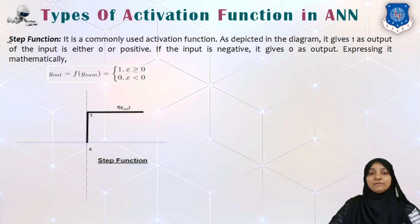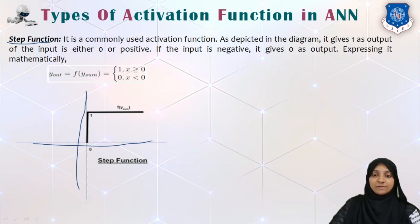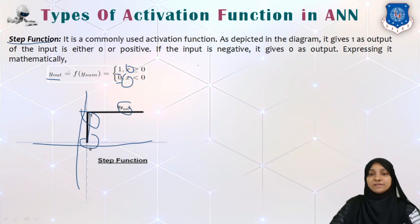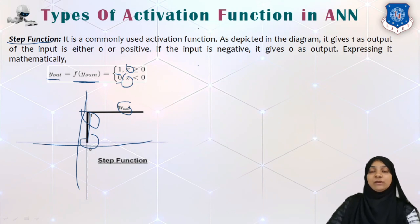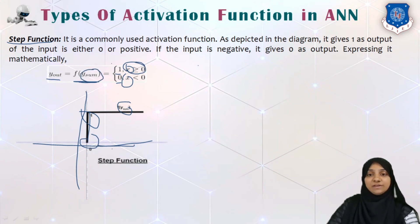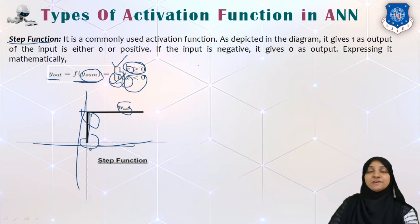The second type of function is the step function, which is a commonly used activation function. If depicted over a two-dimensional X-Y graph, the step function produces either Y equal to 1 or 0. So Yout is either 1 or 0 depending on the X value, where X is a function of Ysum. For any Ysum value greater than or equal to 0 we get output 1; for any negative value of Ysum we get output 0.